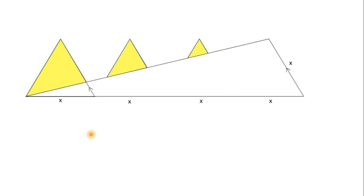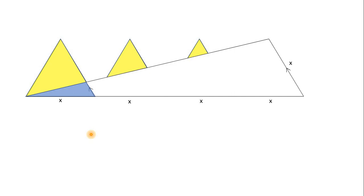These two lines are parallel, so the biggest triangle and the smallest triangle are similar. We can use the proportionality of their corresponding sides. Suppose this side is Y; then we get the relation X upon 4X equals Y upon X. Since the whole base is X plus X plus X plus X = 4X, we get Y = X/4.